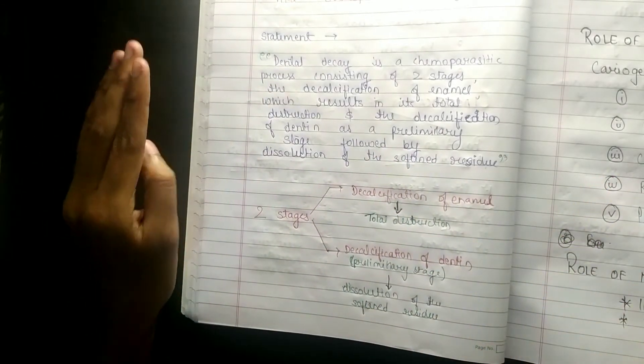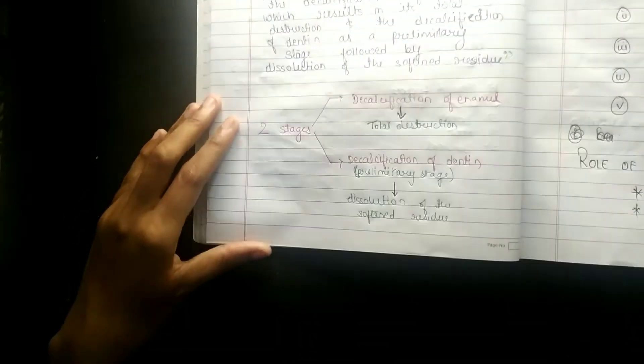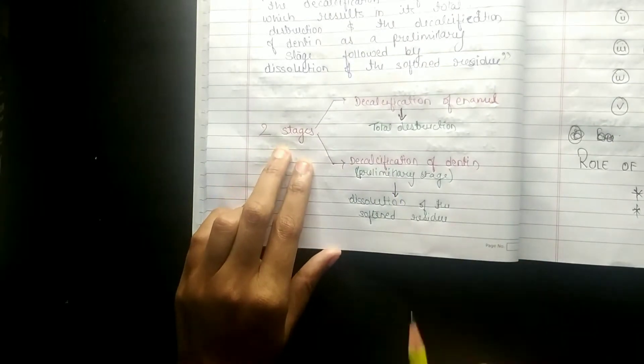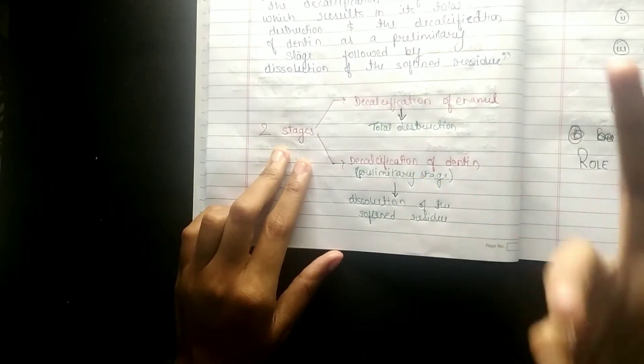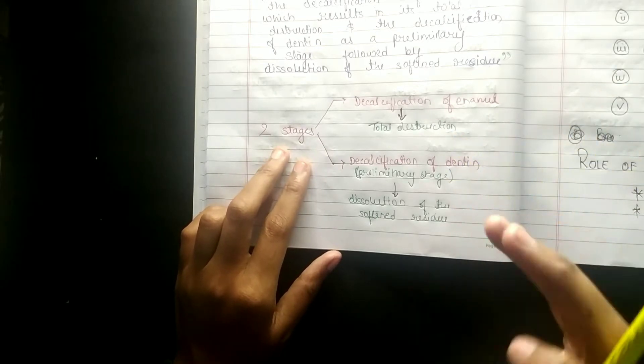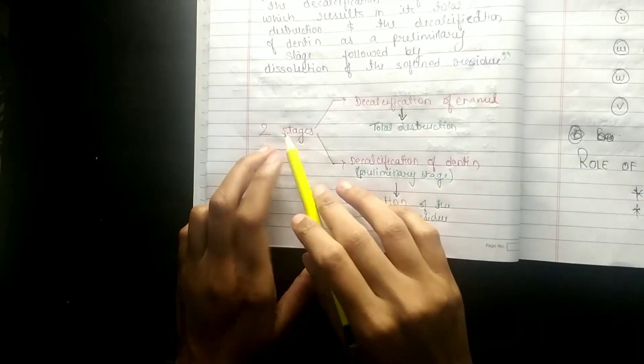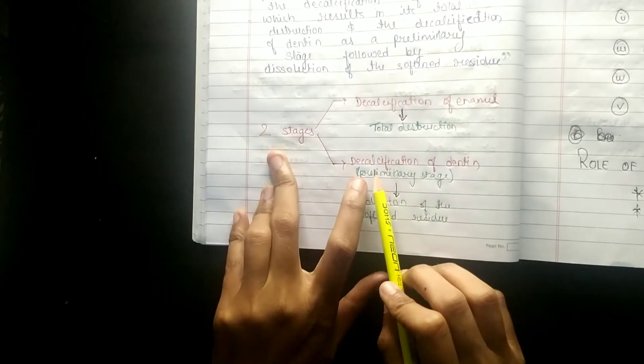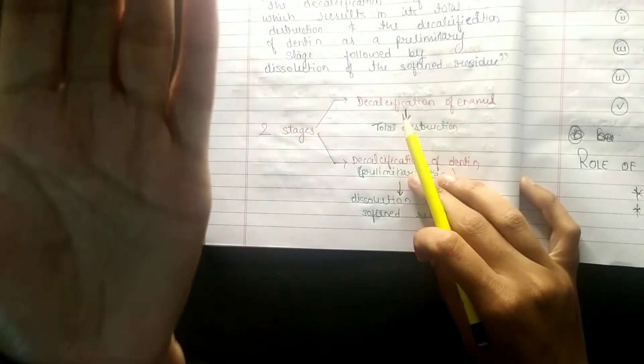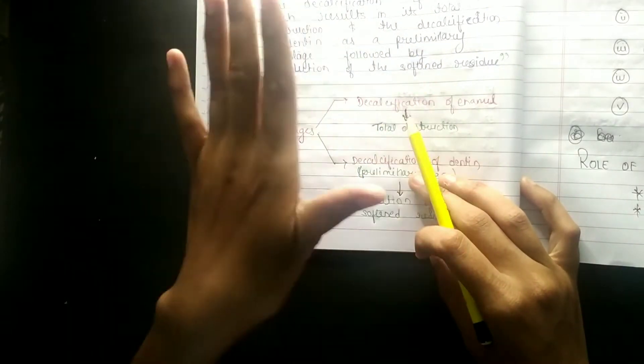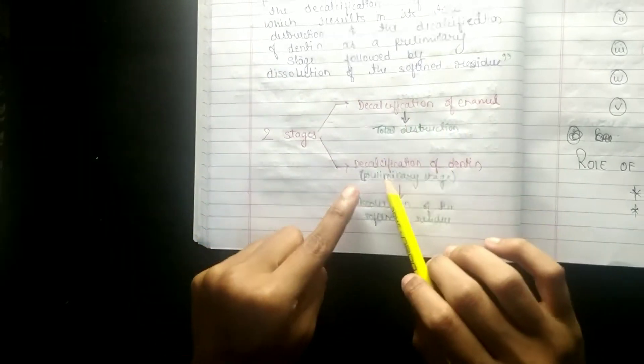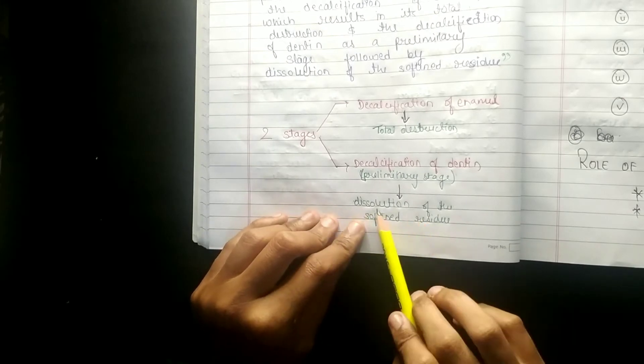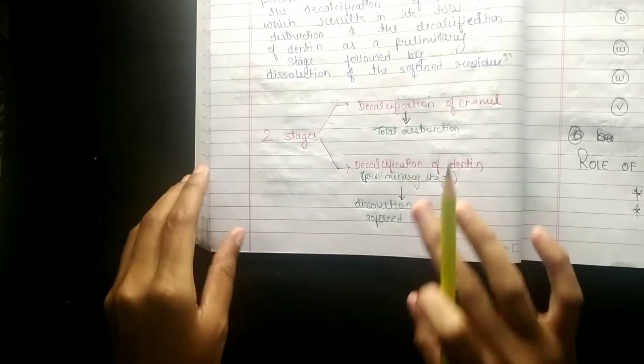Did you understand it? If not, it will come. So what did they say? Basically that your dental caries happens because of the chemo parasitic process. If you understand it from the other name, chemo parasitic theory also. There are two stages. First of all, decalcification of enamel - what is happening? Total destruction. Then decalcification of dentine - what is happening? First of all enamel, then dentine. The whole destruction - decalcification of dentine is called preliminary stage also, and what is happening? Dissolution of the softened residues.